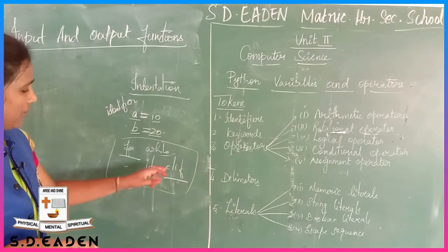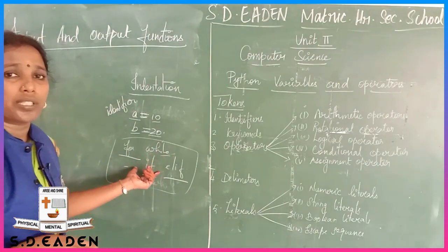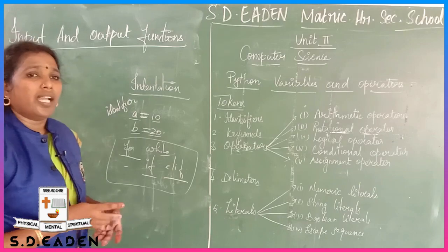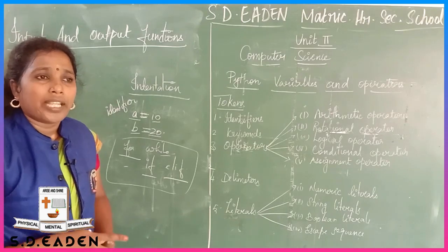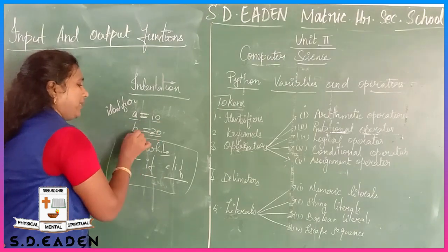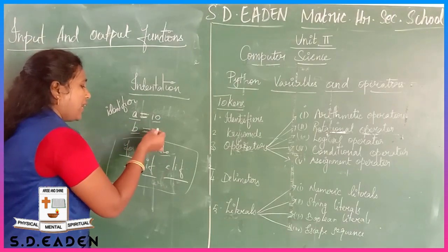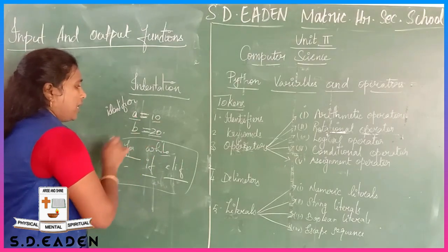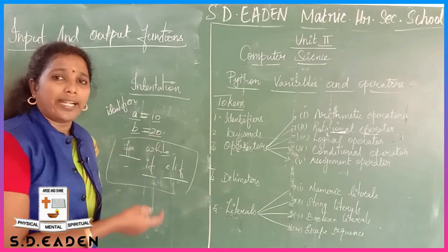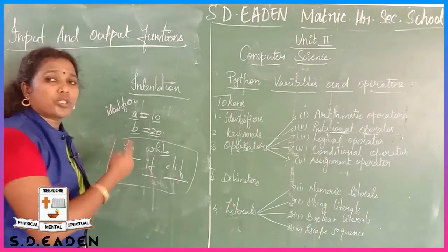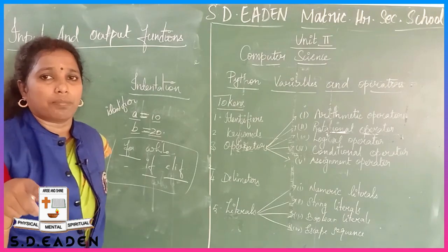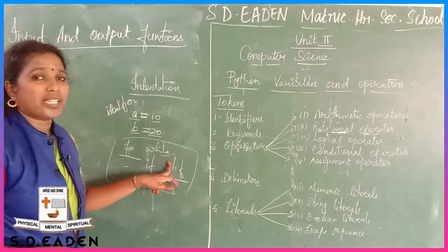Keywords are reserved words. For example, we use a normal identifier: a equal to 10, b equal to 20. But if you try 'for equal to 10', b equal to 20 - this will not work because 'for' is a keyword. Keywords have a special function, that is why you cannot use them as normal identifiers.